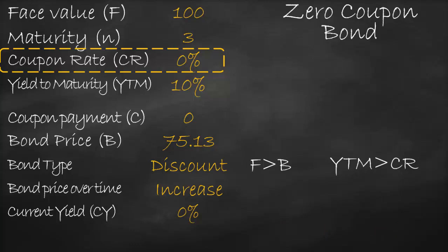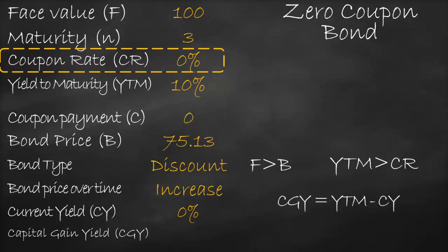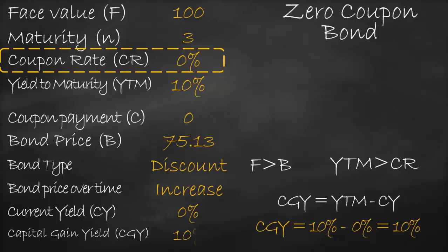What about capital gain yield? The formula is yield to maturity minus current yield. Our yield to maturity is 10 percent and our current yield is always zero percent, so capital gain yield equals 10 percent. Therefore, for zero coupon bonds, the current yield is always zero while the capital gain yield is always equal to yield to maturity.